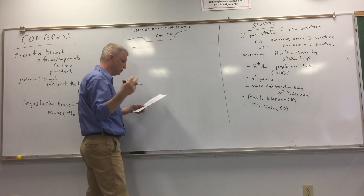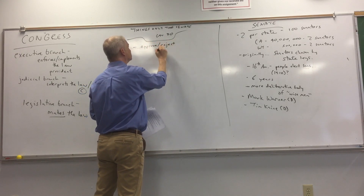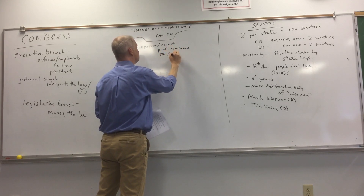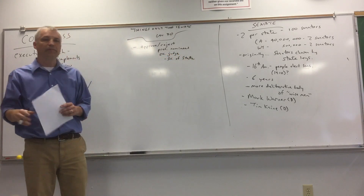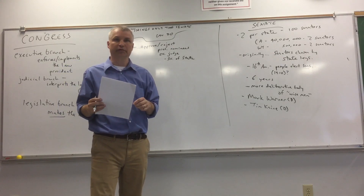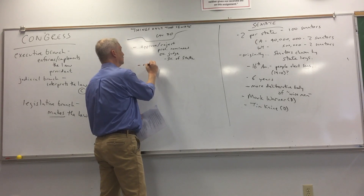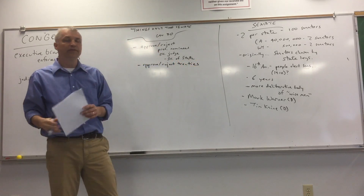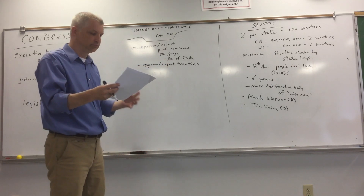Things that only the Senate can do: when the president nominates certain people like a judge or a Secretary of State, the Senate gets to approve or reject them — the House does not get a vote. Also, if the president negotiates a treaty with another country, the Senate gets to either approve it or reject it, and the House does not get a vote on that either.